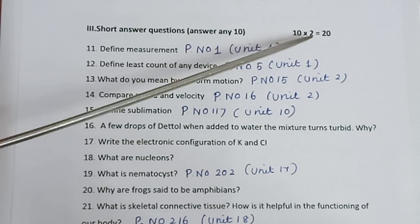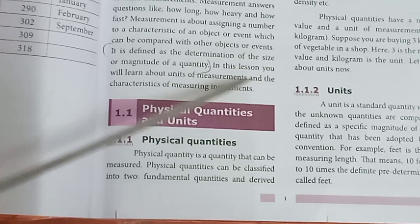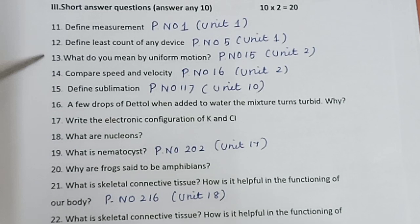Part 3: Short answers. Answer any 10. 10 into 2 is equal to 20. Question 11: Define measurement. Page number 1, Unit 1. It is defined as the determination of the size or magnitude of a quantity.